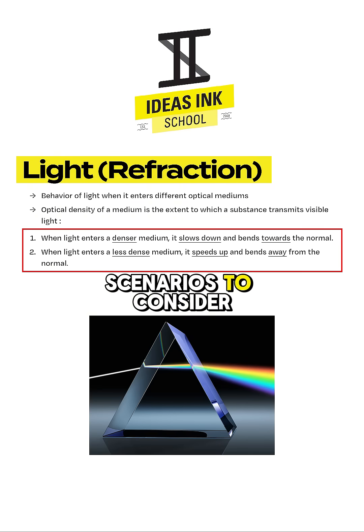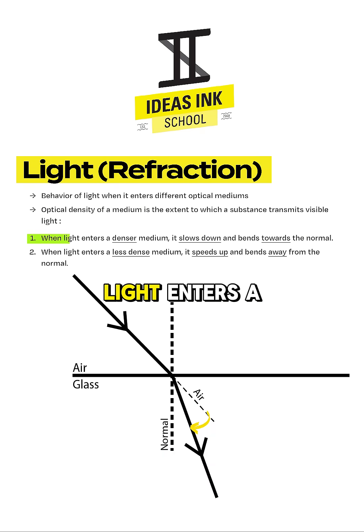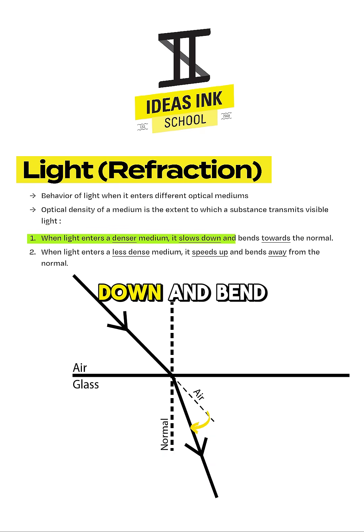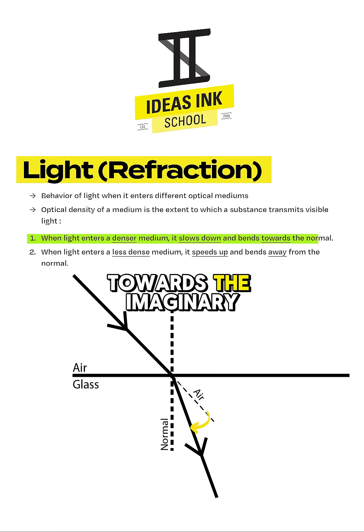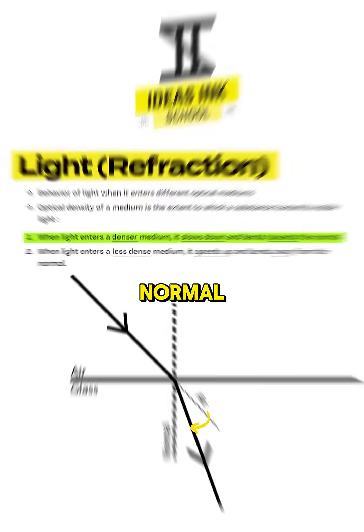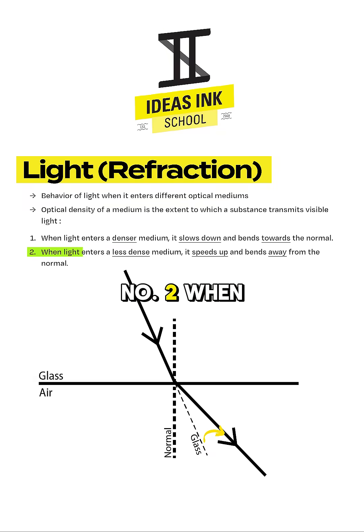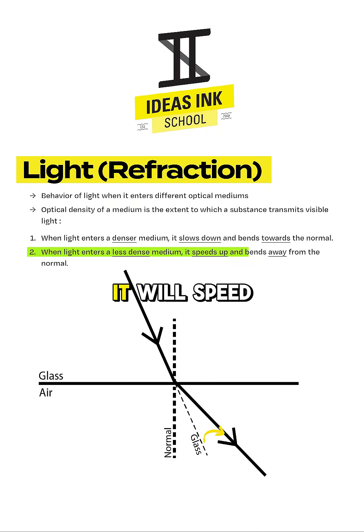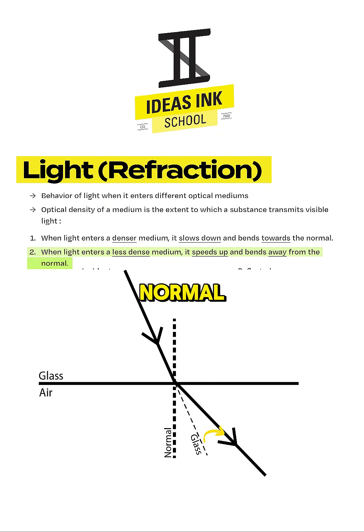There are two scenarios to consider. Number one, when light enters a denser medium, it will slow down and bend towards the imaginary normal. Number two, when light enters a less dense medium, it will speed up and bend away from the normal.